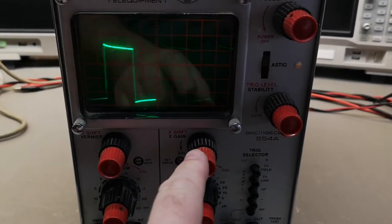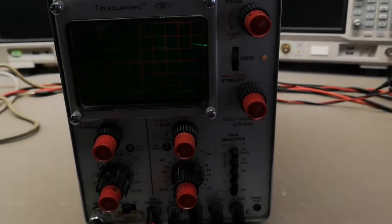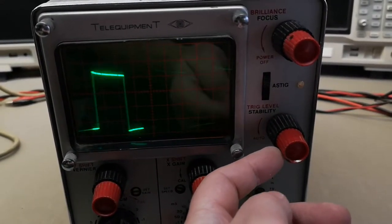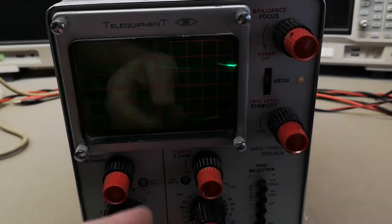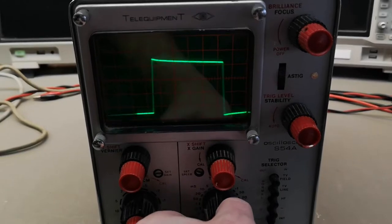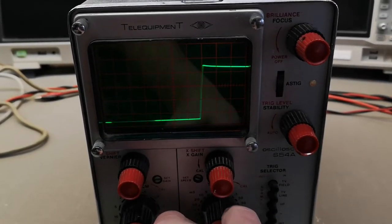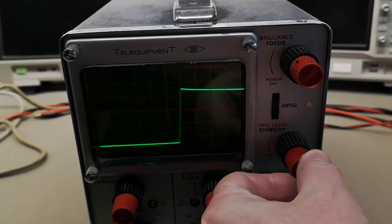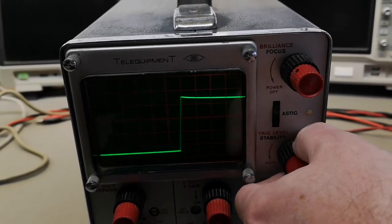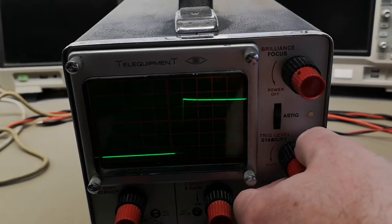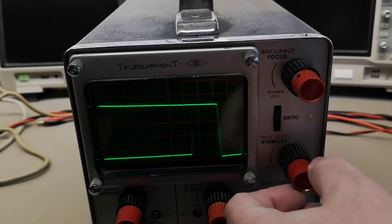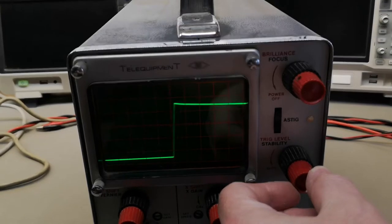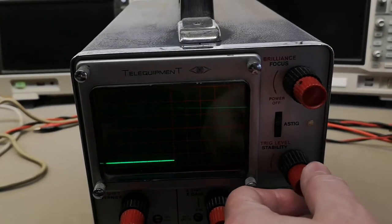I am able to get something on the screen, but oh my god, this is the most dodgy scope that I have ever tried to play with. The trigger here is just impossible to work with. So far I got a decent picture, but look at this. This is the trigger level and then something with stability. It just makes the picture go crazy. It's just absolutely impossible to work with.